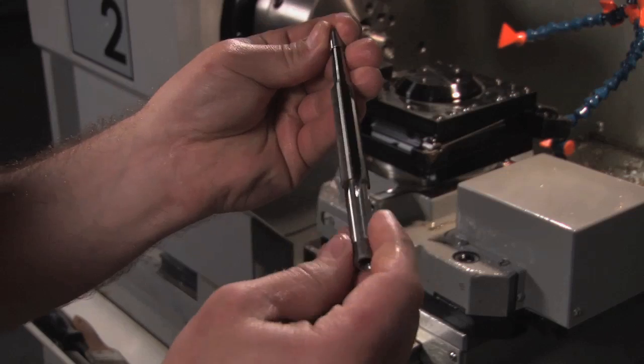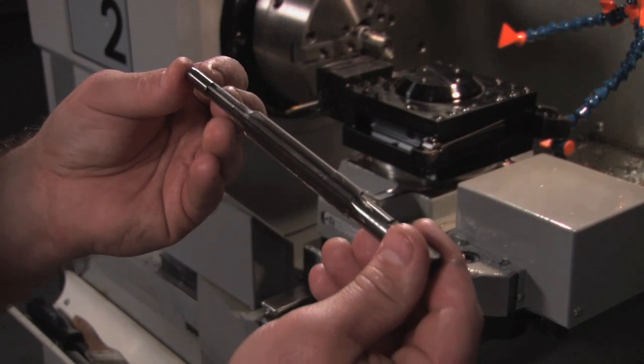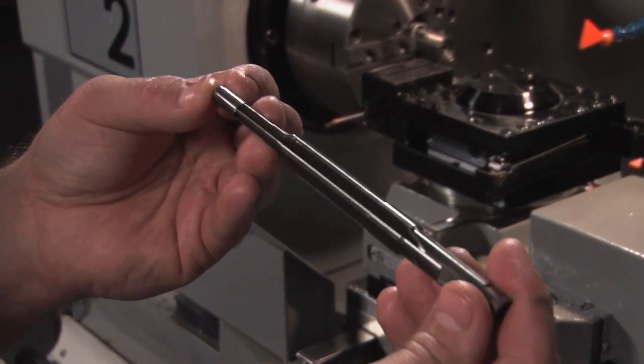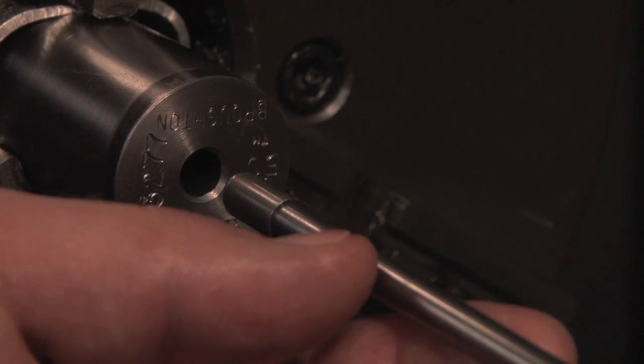A custom rifle will utilize a match dimension reamer with a special throat angle and length. Throat length determines the bullet seating depth.